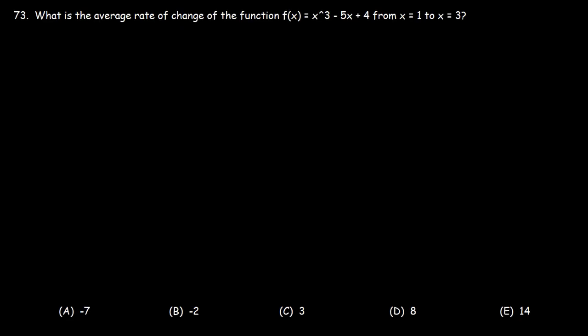Now, if we want to find the average rate of change of a function, let's say over the interval a to b, or which is from x equals a to x equals b, here's what you need to do. It's going to be f of b minus f of a over b minus a.